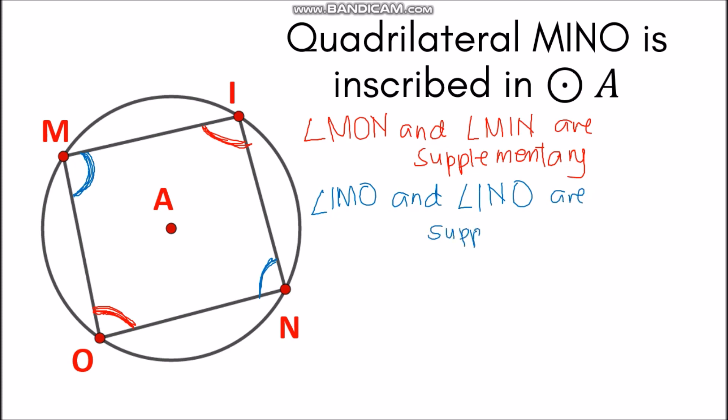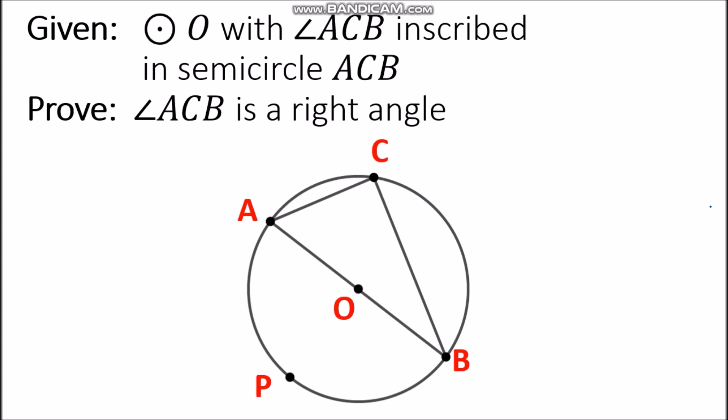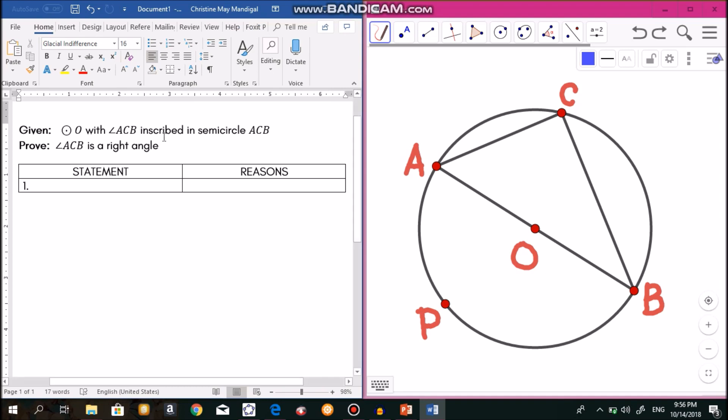Next, let's try to prove one of the theorems presented, which is Theorem 98, the Semicircle Theorem. Given circle O with angle ACB inscribed in a semicircle, which is arc ACB, we need to prove that this angle is a right angle — because this is what the theorem states: whenever we have an angle inscribed in a semicircle, it will be a right angle.